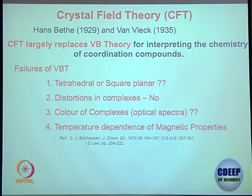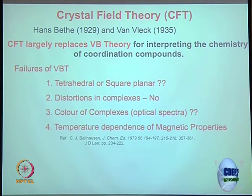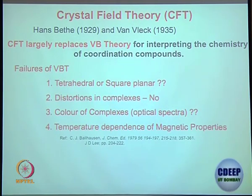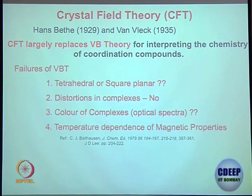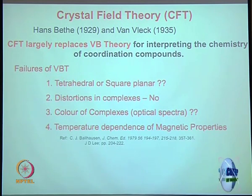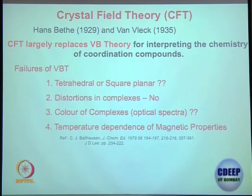Valence bond theory really cannot explain tetrahedral and square planar geometries. When there is any distortion, valence bond theory is discussing an ideal situation — bond elongation, shortening, these things cannot be explained by valence bond. In a moment you will see how the distortion is handled by crystal field theory. The color of complexes, of course, you cannot have any idea about what color the complex should be from knowing the hybridization or the ligands.